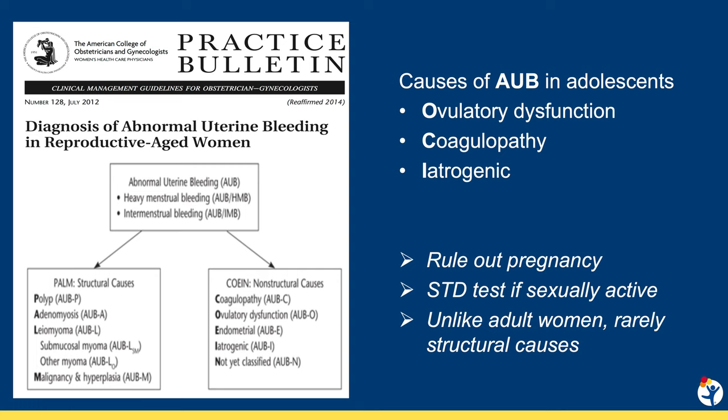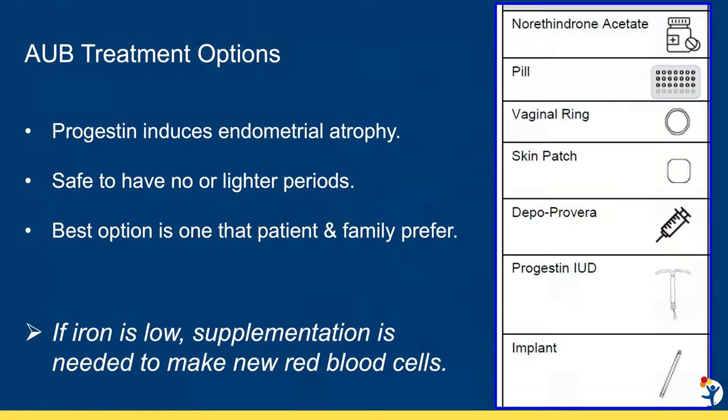It's important to work with patients to find an option that also has a bleeding profile that works for them. The treatment of AUB really depends on the severity of the condition and the goals of the patient and her family. All of the options listed here contain progestin, which when given over time causes the lining of the uterus to thin and eventually become atrophic.